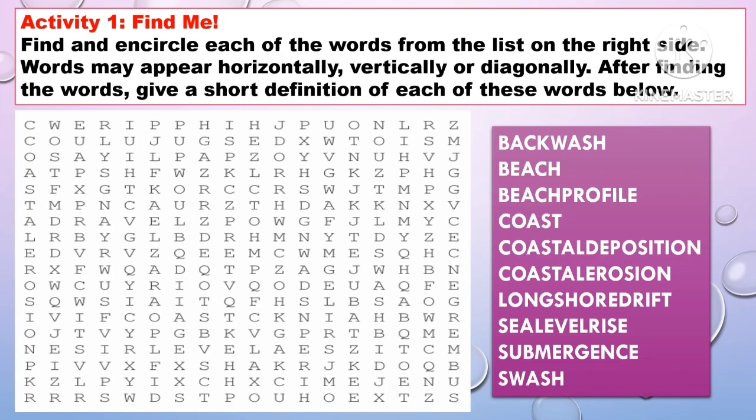Before we proceed to our discussion, let us have an activity first called Find Me. All you have to do is to encircle each of the words from the list on the right side. Words may appear horizontally, vertically, or diagonally. After finding the words, give a short definition of each of these words below.